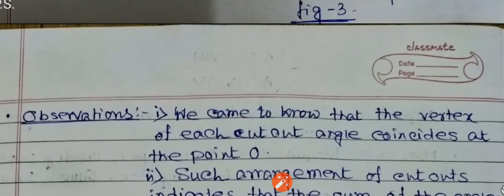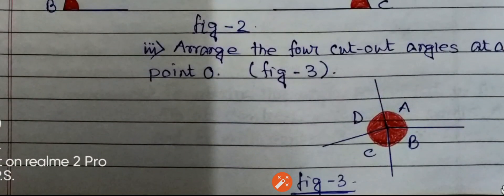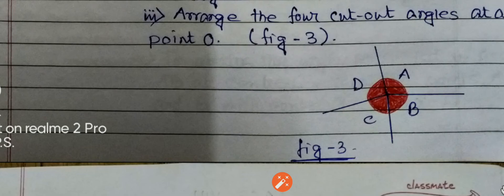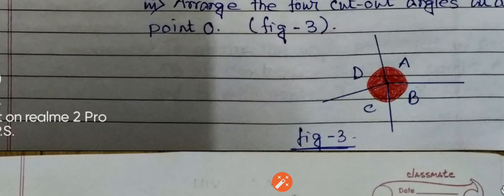Now when we arrange this in this way, we can see that it makes a complete angle, that is 360 degrees.